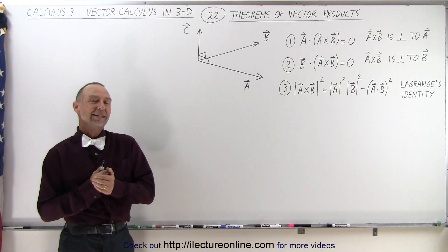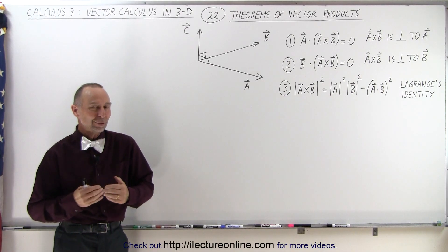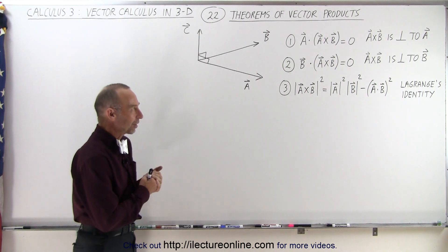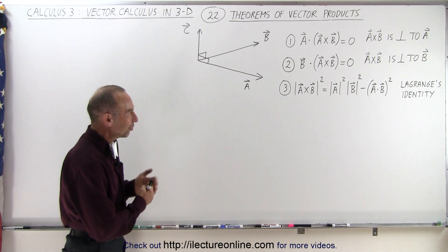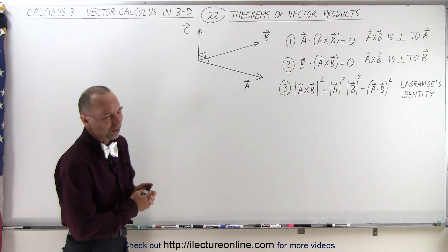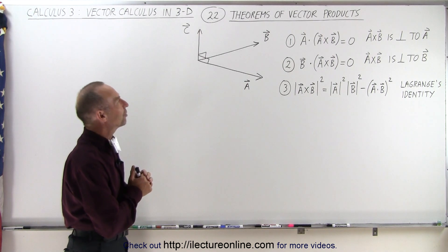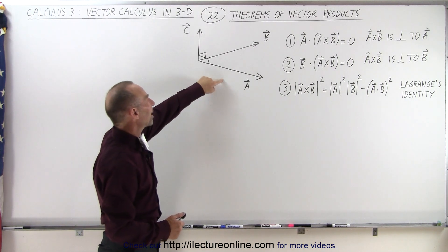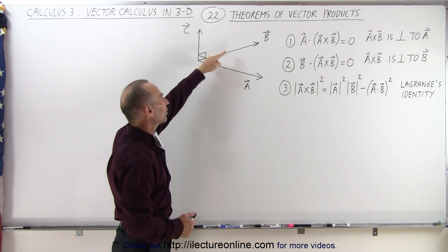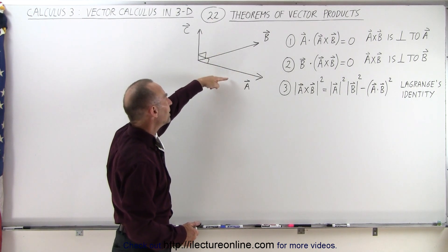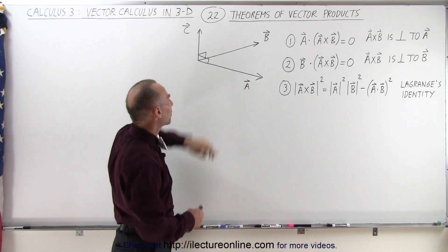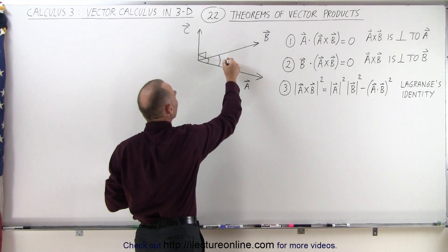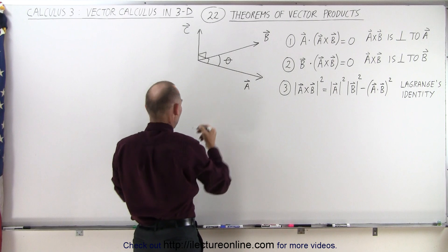Welcome to our lecture online. Let's take a look at a few theorems of cross products — here are three of them. We have two vectors a and b which are in the same plane, and when we do a cross product between them, there is an angle between a and b — let's call that angle theta.